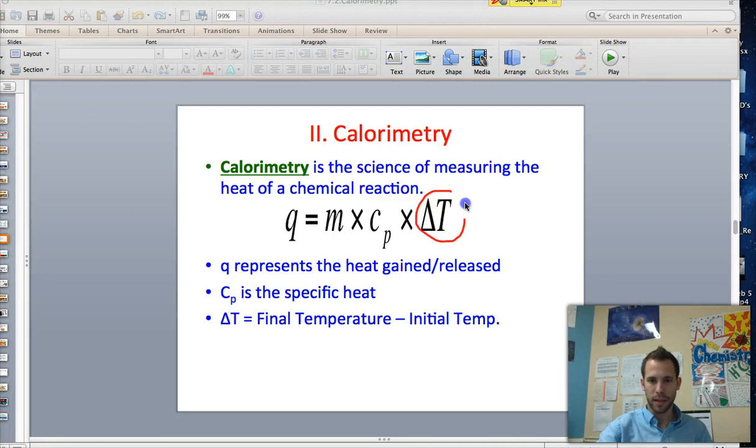This guy right here, delta T, is the change of temperature. The change of temperature is equal to the final temperature minus the initial temperature. And this is how we use calorimetry to measure the heat of a given chemical reaction.